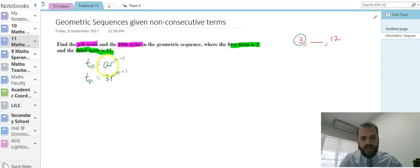Alright, so we know our a value, we really need to know our r value. Now we know that the third term is 12, so that means that 12 equals 3r to the power of 3 minus 1. 12 equals 3r squared. 12 divided by 3 equals r squared, so r squared equals 4.